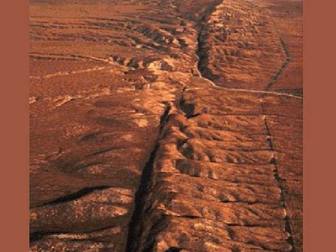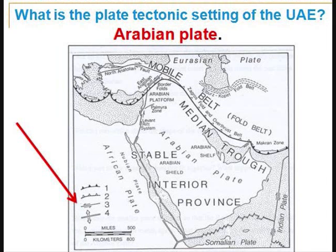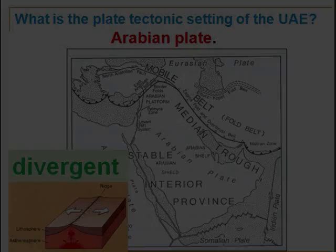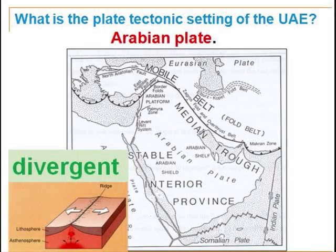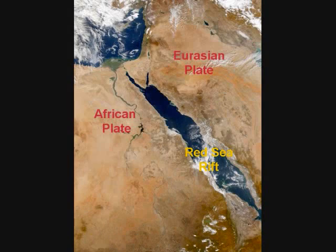Now let's look at some specific geological examples. On this map, we see symbols that geologists use to show plate boundary movement — divergent, convergent, and transform. Using these symbols to read the map, we can see that the Arabian plate, located between Africa and the Eurasian plate, is moving away from Africa and toward Asia.